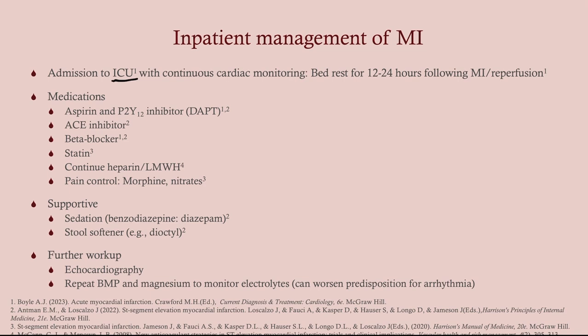As far as medications, a lot of this stuff we just continue from our initial management. We have dual antiplatelet therapy — aspirin and a P2Y12 inhibitor. Why are those so good together? Aspirin is an inhibitor of the COX enzyme, which reduces thromboxane A2, which is responsible for platelet aggregation. The P2Y12 inhibitors block the P2Y12 receptor, which activates platelets. So we're going after platelet activation and aggregation — hitting it in two spots, reducing the risk of a platelet clot.